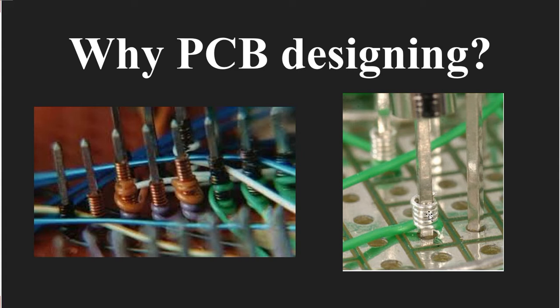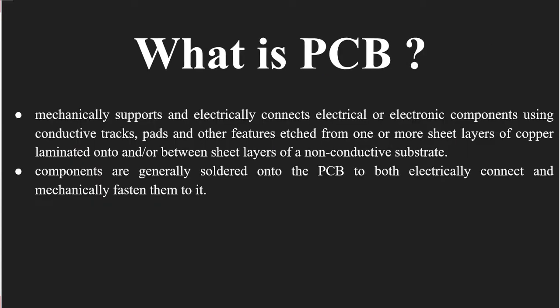The next question is: what is a PCB? What does the word PCB mean? A PCB mechanically supports and electrically connects electrical or electronic components using conductive tracks, pads, and other features etched from one or more sheet layers of copper laminated onto or between sheet layers of a non-conducting substrate, depending on how many layers you are using or designing. Components are generally soldered onto the PCB to both electrically connect and mechanically fasten them.